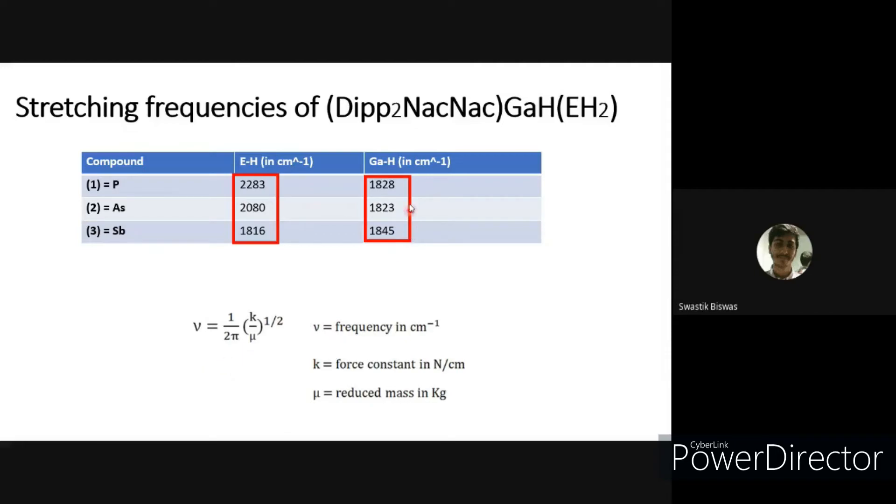As the mass of the substitution increases, the E-H stretching frequency decreases, whereas the Ga-H mass does not change through the wave number.